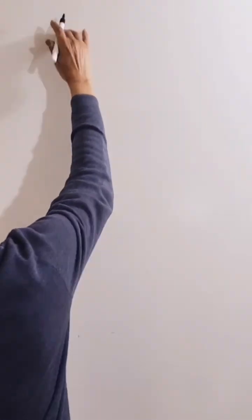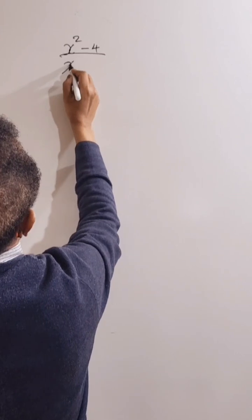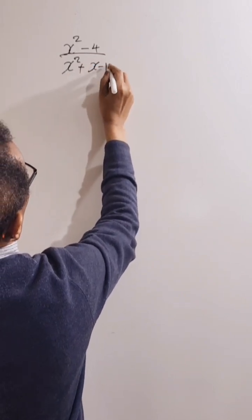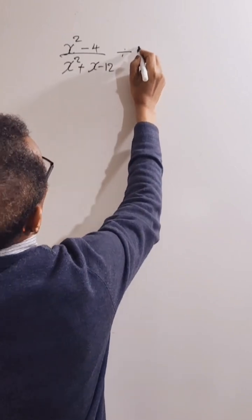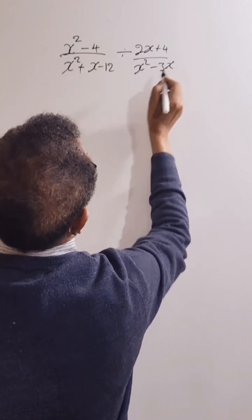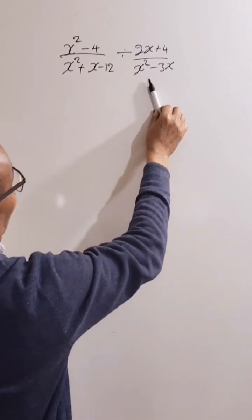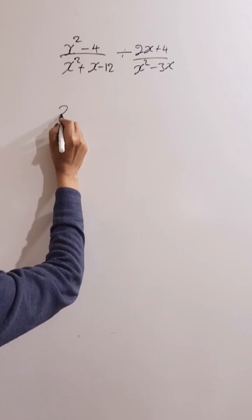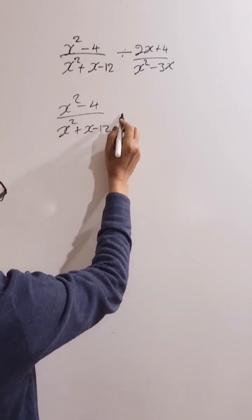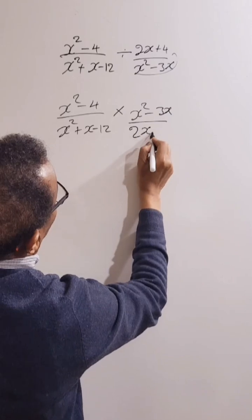Okay, let's do one more. Let's simplify x squared take away four, over x squared plus x take away 12, divided by two x plus four over x squared plus x take away 12.